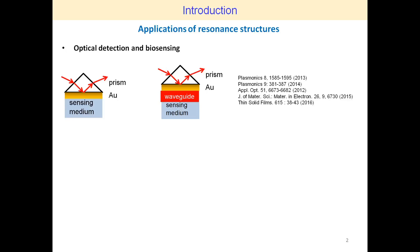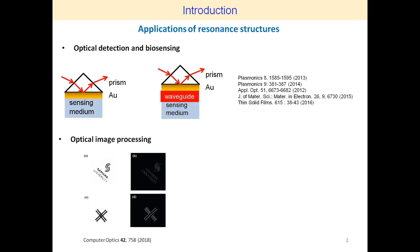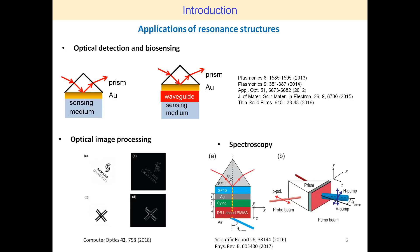Spectral-spatial filtration based on resonance structures has found many applications in sensing, optical image processing, spectroscopy, laser optics, and other fields. Estimation of the resonance field enhancement and characteristics of resonance line shapes in the spectral response attracts considerable attention for design of resonance structures and determination of structural parameters.